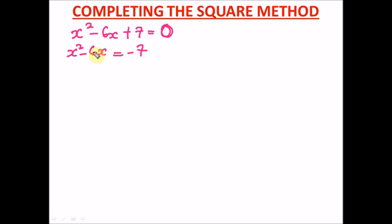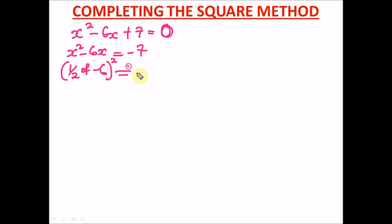The third step is to add the square of half the coefficient of x to both sides of the equation. Let's write this down. The coefficient of x is minus 6. So half of minus 6 is minus 3, and we square that to get minus 3 raised to the power 2.